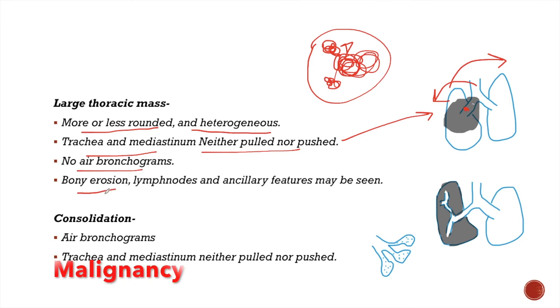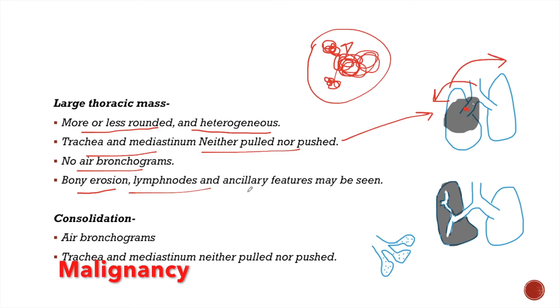Other features pointing to malignancy, like bone erosion, lymph nodes, and ancillary features, may also be seen in case of mass.